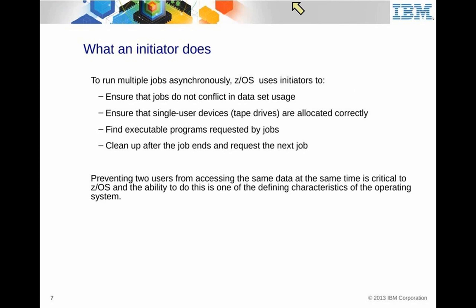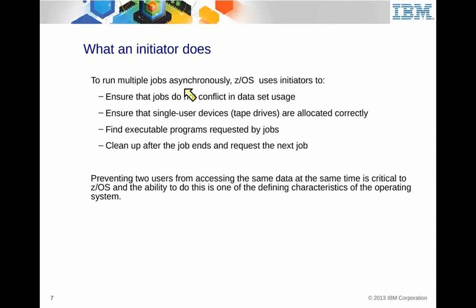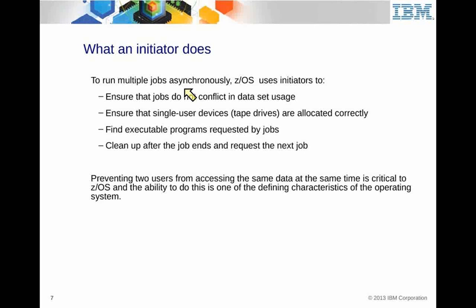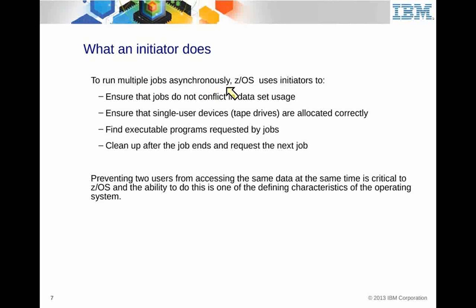What does an initiator do? Once a job is in the input queue, there has to be an initiator available to process it. The initiator is the point of presence between JES and the z/OS operating system itself — that's where the work is done. A job can be in the input queue waiting for an available initiator. Once an initiator becomes available, if the job has the right attributes matching the initiator's attributes, it will jump on the initiator and begin processing. The initiator permits us to run multiple jobs asynchronously.